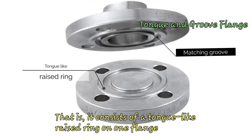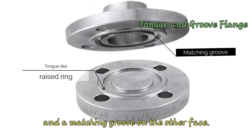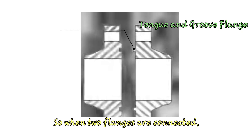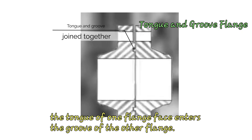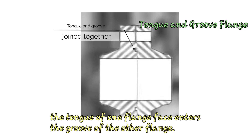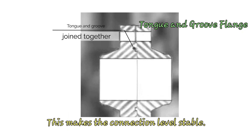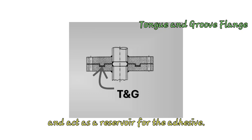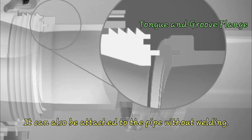The tongue and groove flange features matching grooves and raised sections — it consists of a tongue-like raised ring on one flange and a matching groove on the other face. When two flanges are connected, the tongue of one flange face enters the groove of the other. The advantage of tongue and groove is that it self-aligns, acts as a reservoir for adhesive, and can be attached to the pipe without welding.